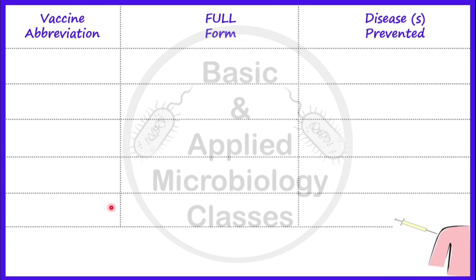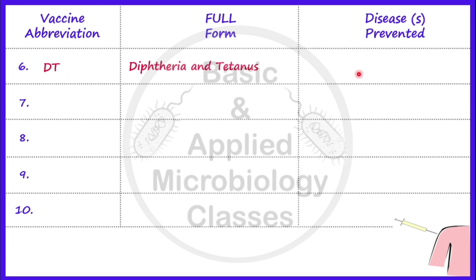Now let's talk about the next vaccine, that is DT. DT stands for Diphtheria and Tetanus. This vaccine prevents diphtheria, which is caused by Corynebacterium diphtheriae, and tetanus, which is caused by Clostridium tetani. Both of these are bacterial causal agents.